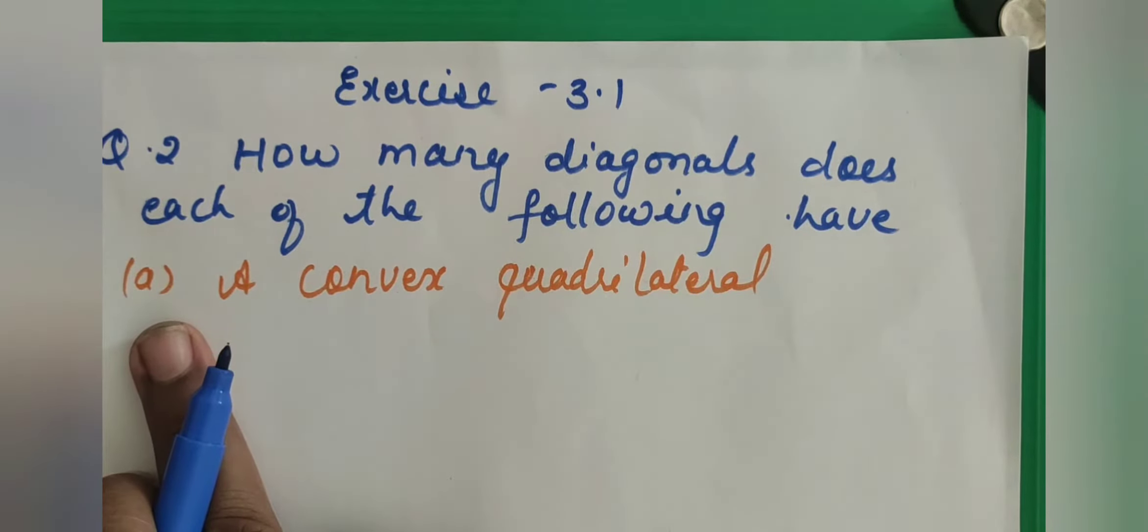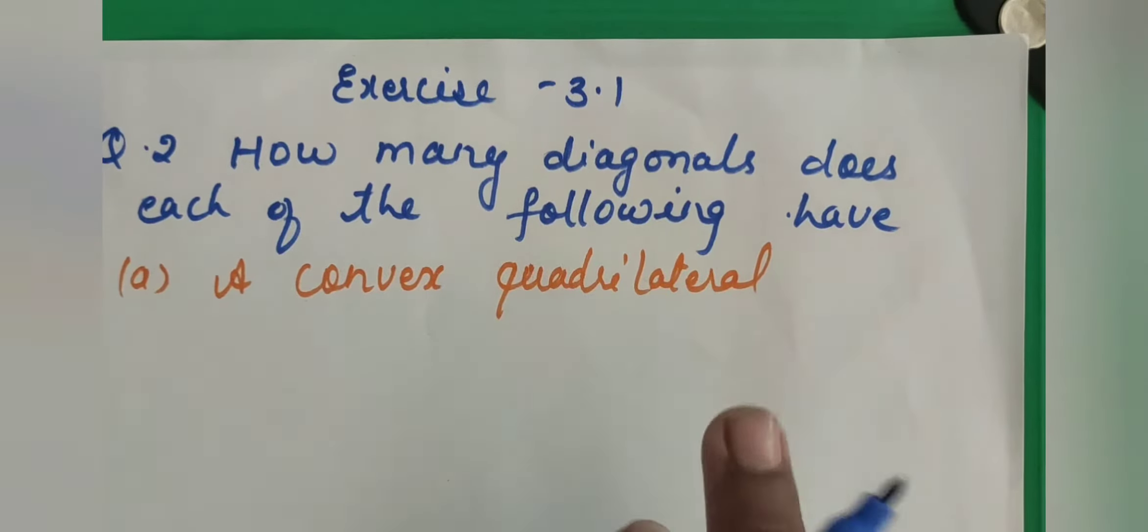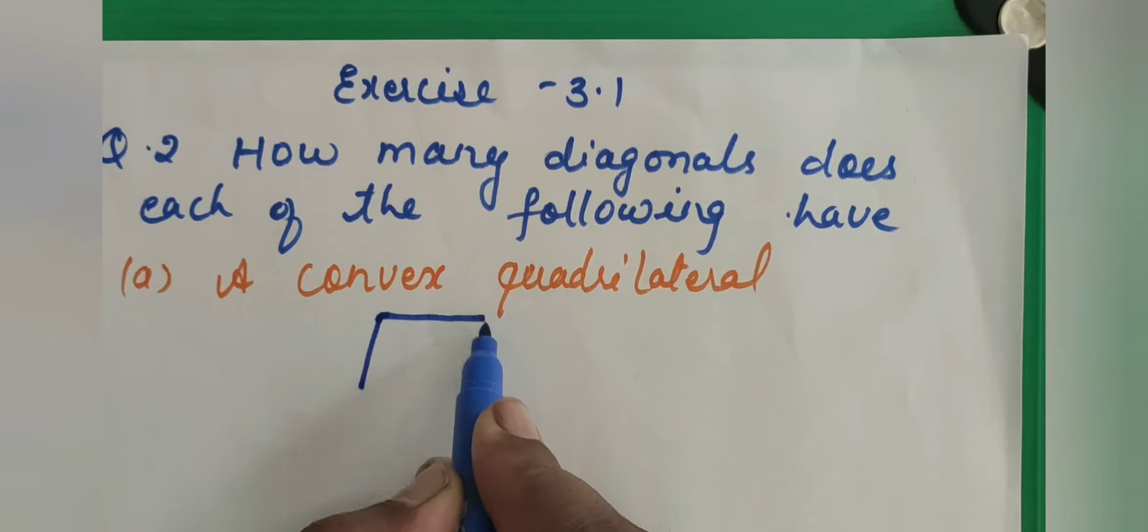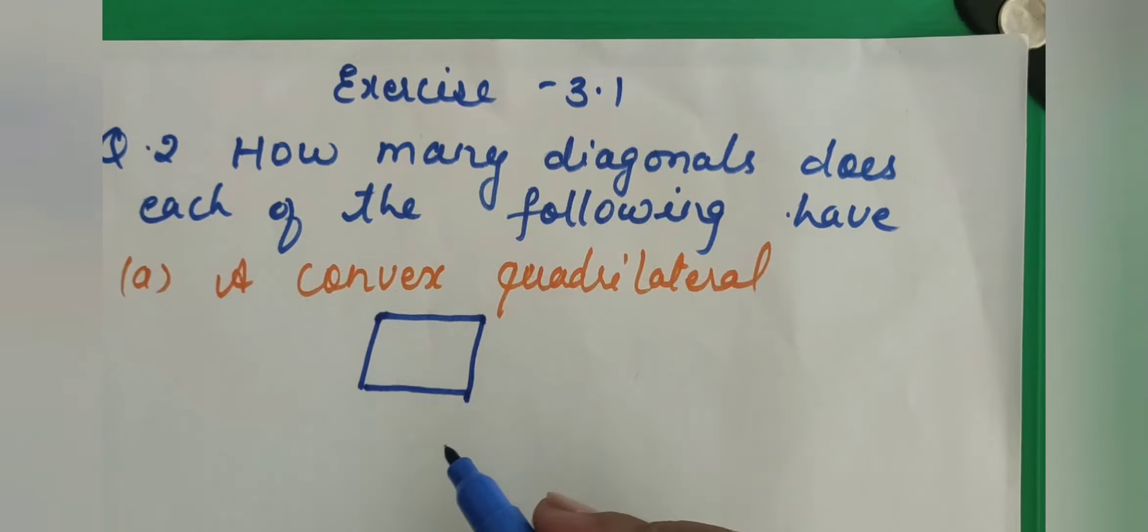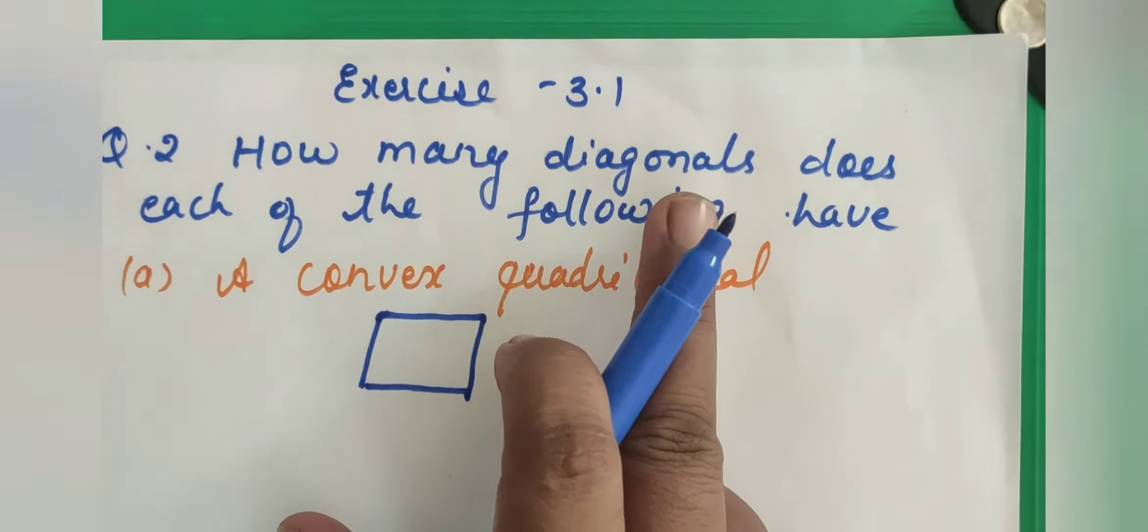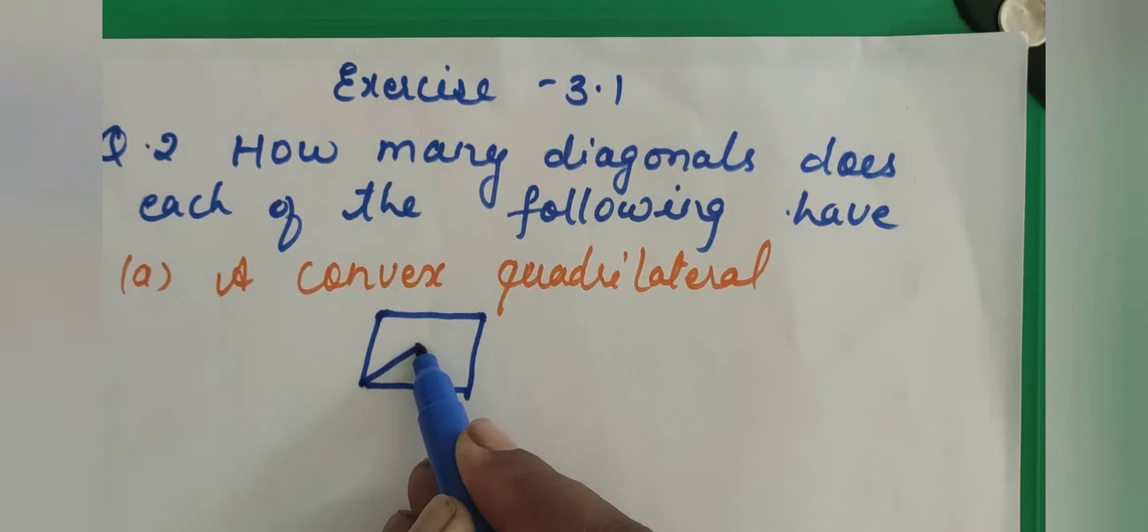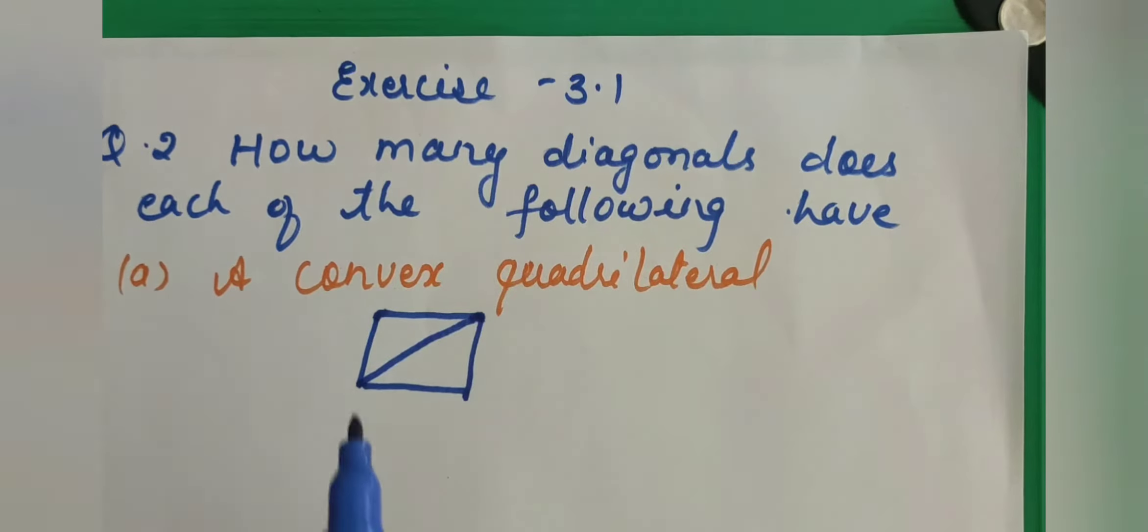The first question is a convex quadrilateral. Here I am making one convex quadrilateral. I already told you what is quadrilateral - the figure which is made up of 4 line segments. And you have to make what? Diagonals. Diagonals are the line segments which join the 2 non-consecutive vertices.